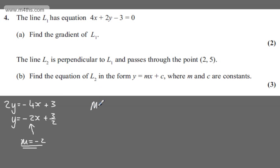For perpendicular lines, m1 × m2 = -1. The gradient of L1 is m1 = -2. Therefore, m2, the gradient of the perpendicular line, is the negative reciprocal, which is 1/2.